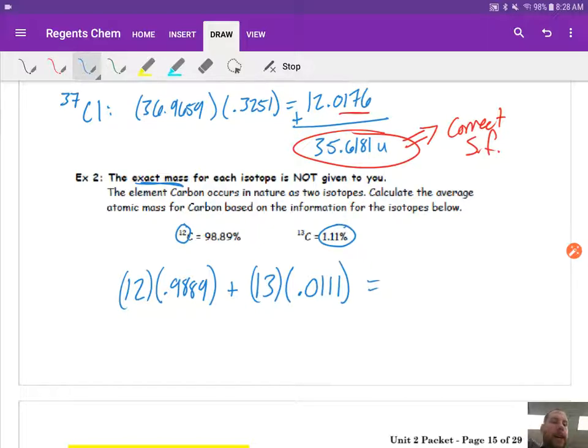So when we go ahead and we write this out, we get 12.011 units or atomic mass units, AMU. You could see it either way. It could be U or it could be AMU. Just be on the lookout. It could be either of those.